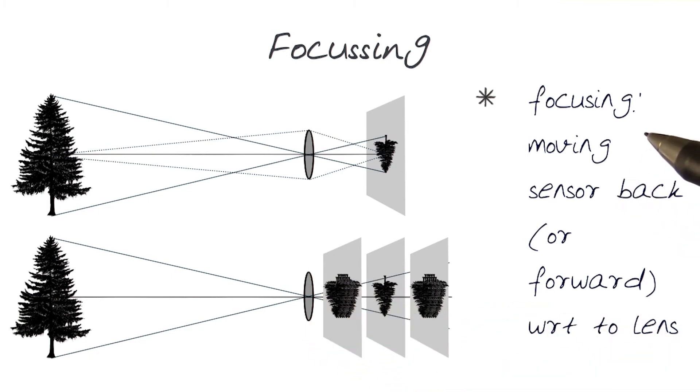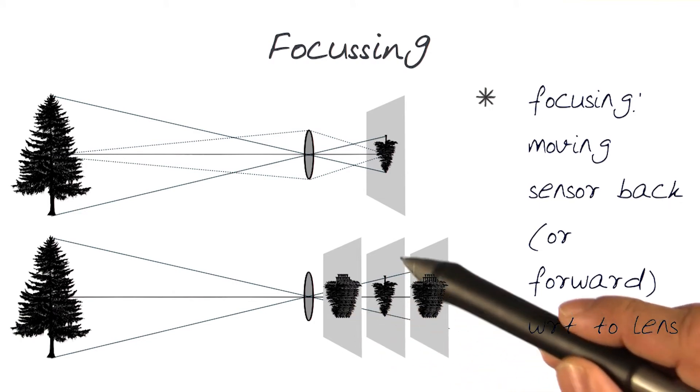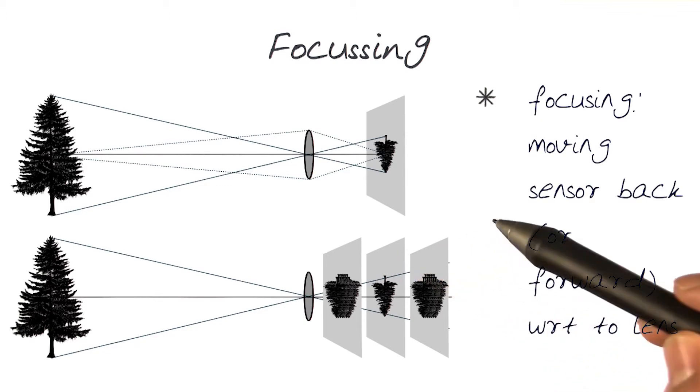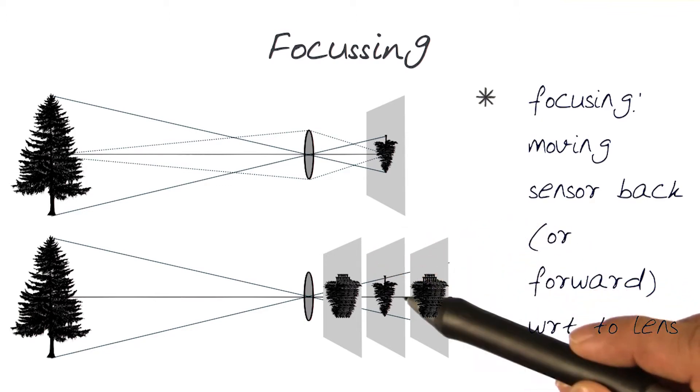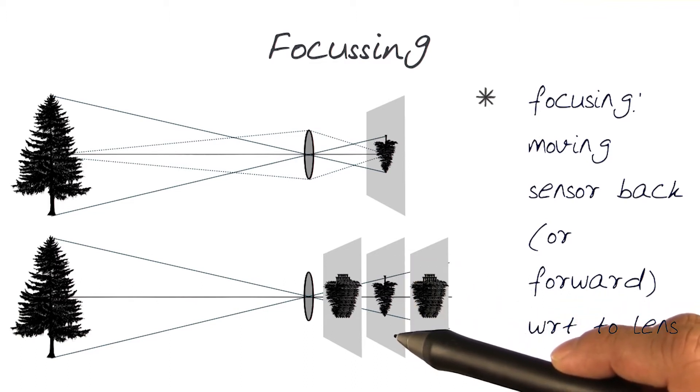The focusing concept is where we move the lens in relationship with the imaging plane, which should be at the focal plane. By moving these two together, you can make sure that the image is formed exactly at the image plane.